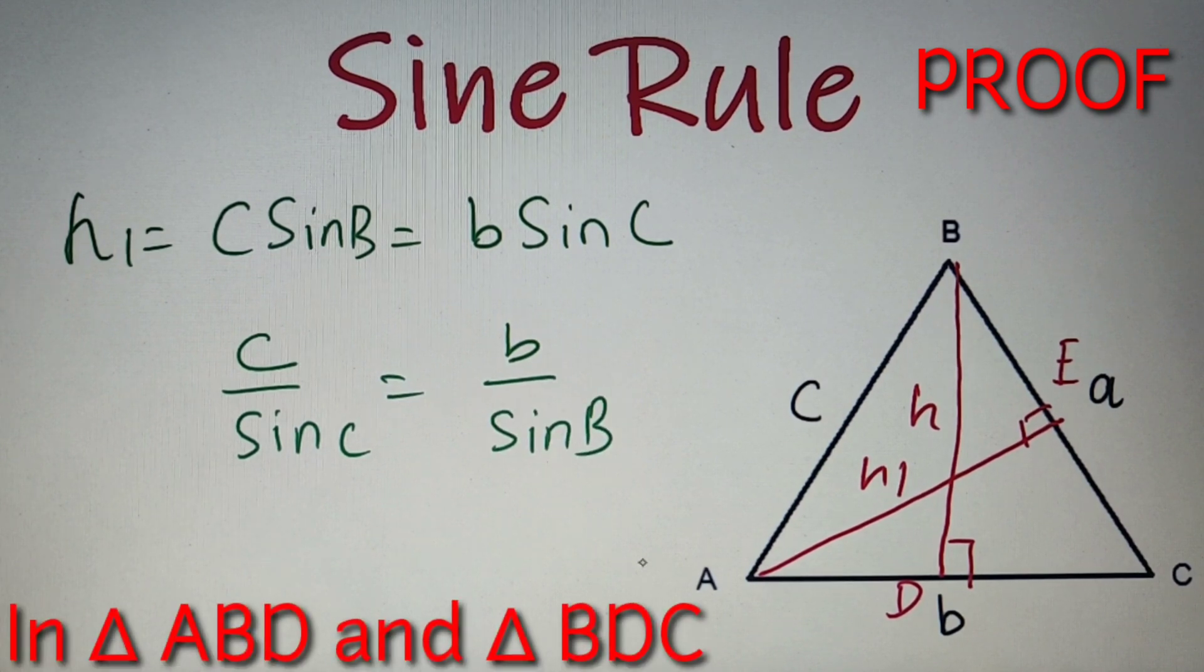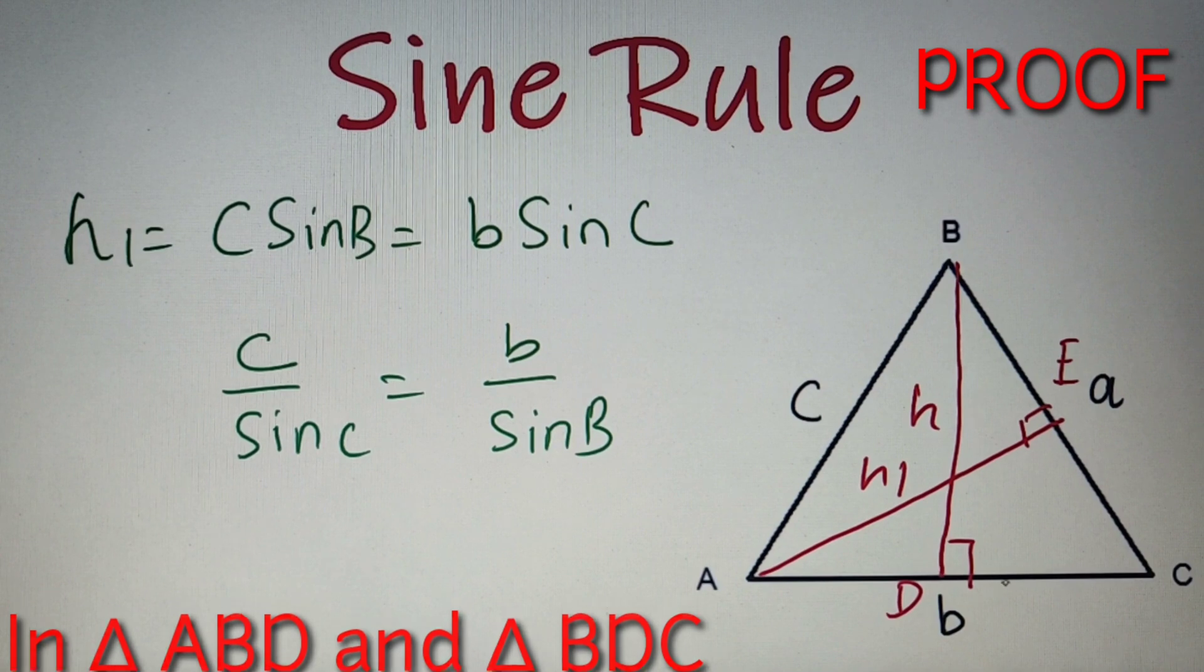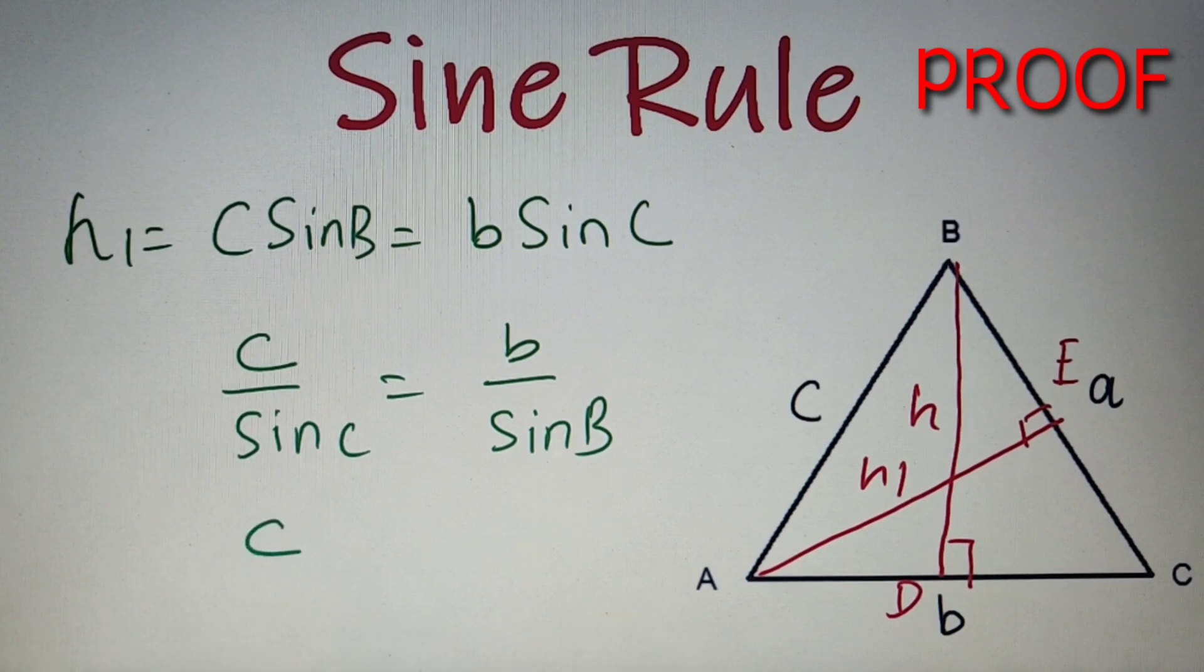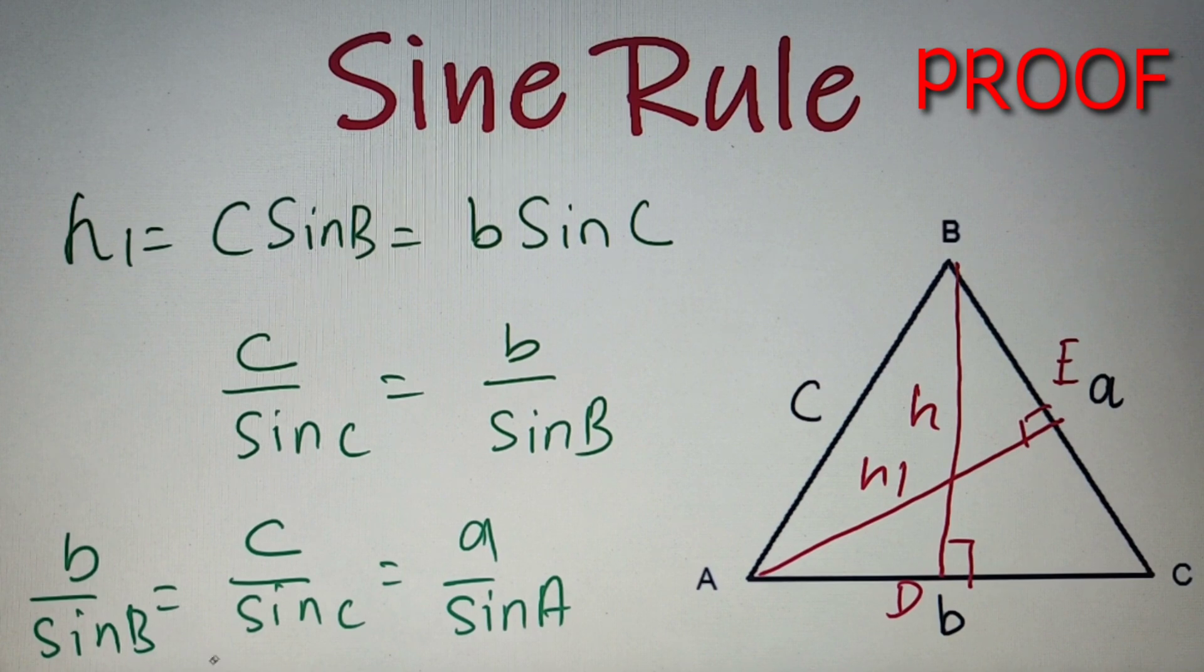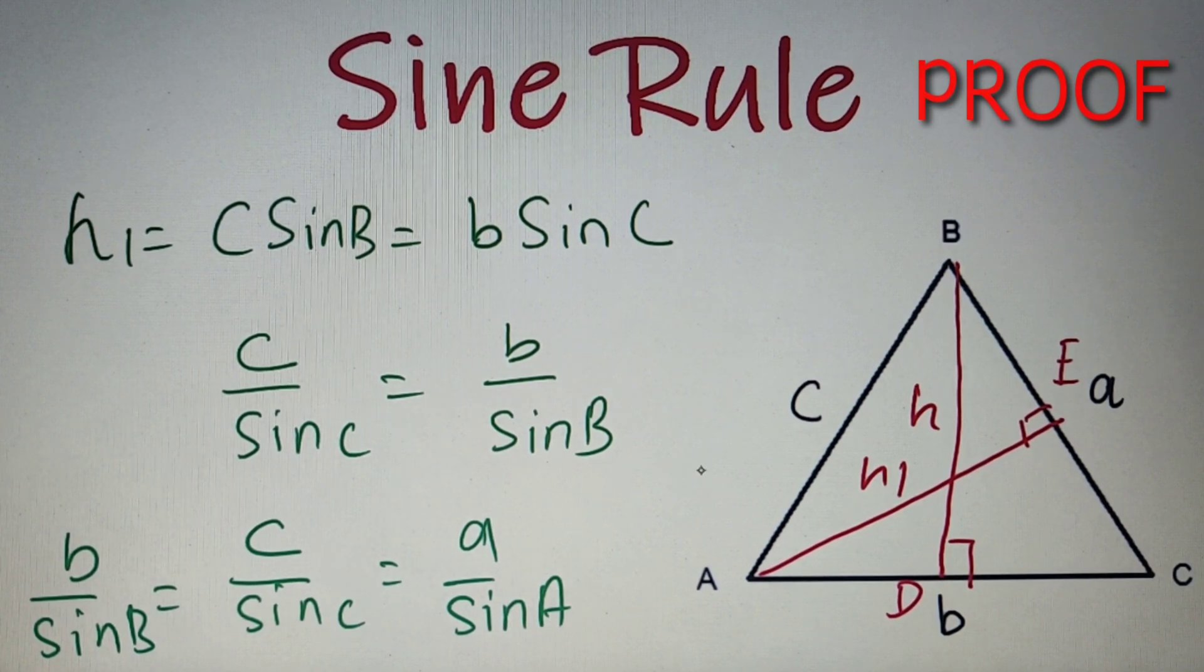Now by applying the same concept in the triangles ABD and BDC respectively, we will get C by sine C is equal to A by sine A. So altogether, we can say that C by sine C is equal to A by sine A is equal to B by sine B. So thus we have proved the sine rule. Now let's solve a simple problem on this topic that will strengthen your concept.